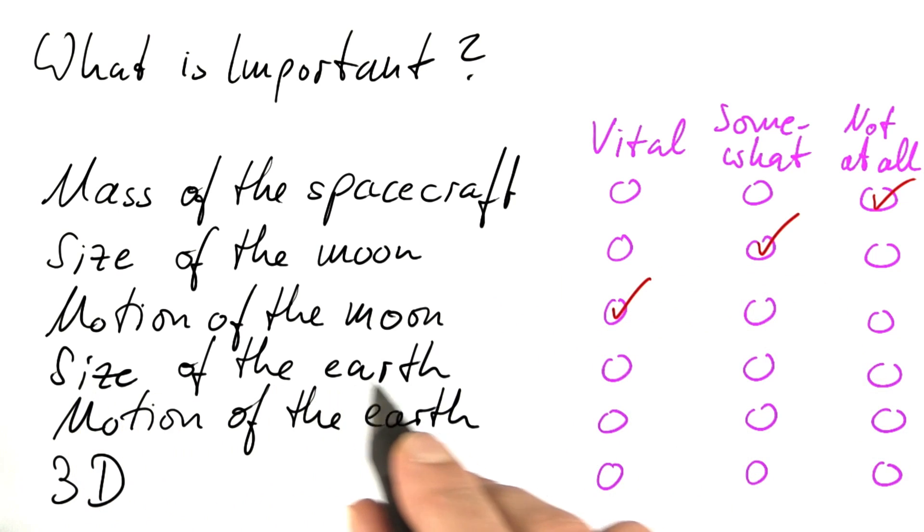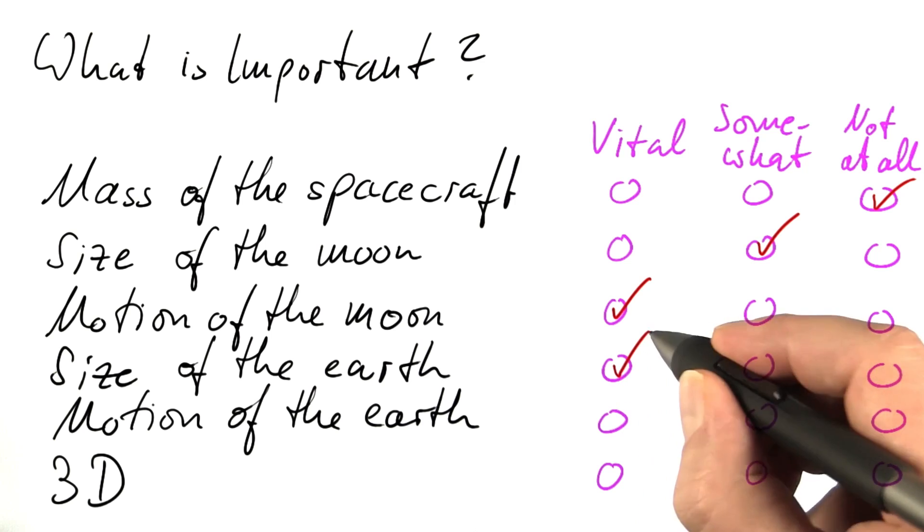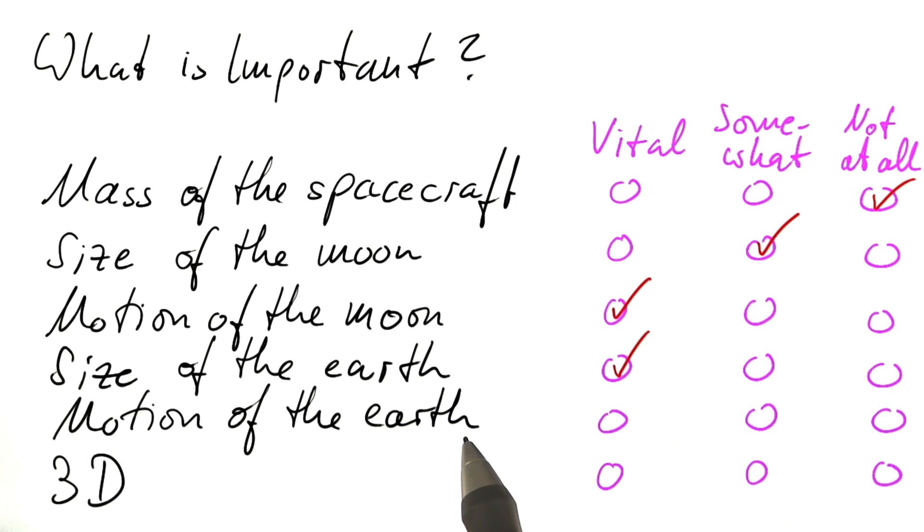The size of the Earth is of vital importance to get close to the surface as we return. The motion of the Earth around the Sun isn't that vital, and should we be treating this as a three-dimensional problem?